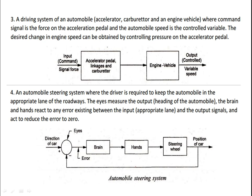If you want to increase speed, apply more pressure to the accelerator pedal. If you are at high speed and see an obstacle or a crowded area, release the pressure from the accelerator pedal so the vehicle speed decreases. You have a signal/force given by the driver, input command, accelerator pedal linkages, carburetor, engine, and vehicle — the output is the controlled variable speed, which is variable since traffic conditions change.